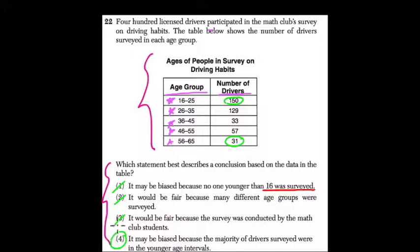Now four is the only answer left that makes sense, and it says this study may be biased because the majority of drivers surveyed were in the younger age intervals. Right, yes—these younger age intervals have a lot more people in them than the older ones. In fact, it starts branching off from 36 and up; there's barely anyone. If I sum these three groups, I don't even get as many as either one of these younger categories, so four is certainly the most reasonable answer. Thanks!